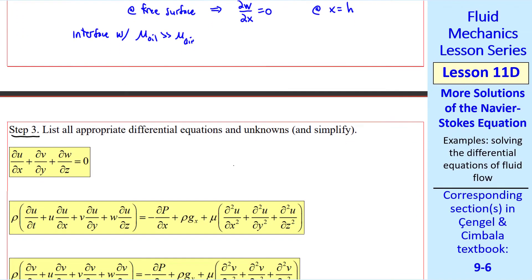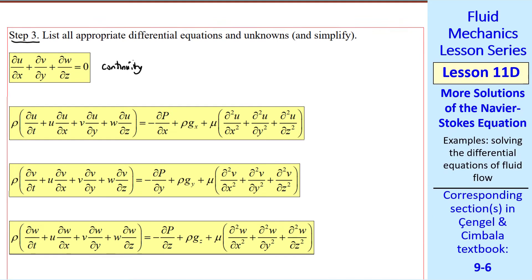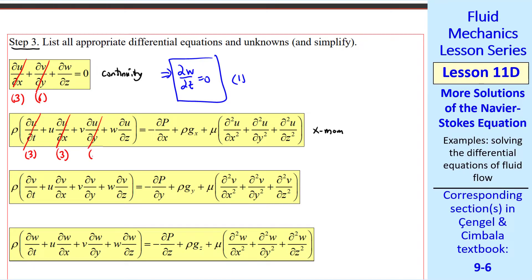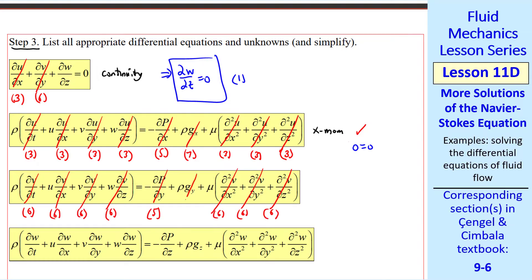Step three is to list all appropriate differential equations and unknowns, and to simplify. For continuity: u is zero by assumption three and v is zero by assumption six, so this reduces to del w / del z equals zero — call that equation one. For the x-momentum equation: u is zero everywhere, so all its derivatives are zero; there's no gravity in x, and pressure is constant, so the x-momentum equation reduces to zero equals zero. In the y-direction, v is zero and there's no gravity, so the y-momentum equation is also perfectly satisfied.